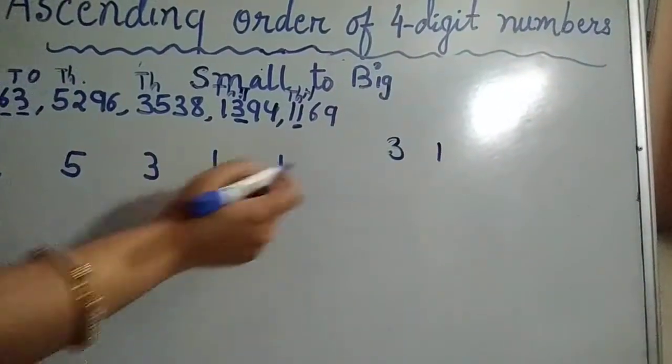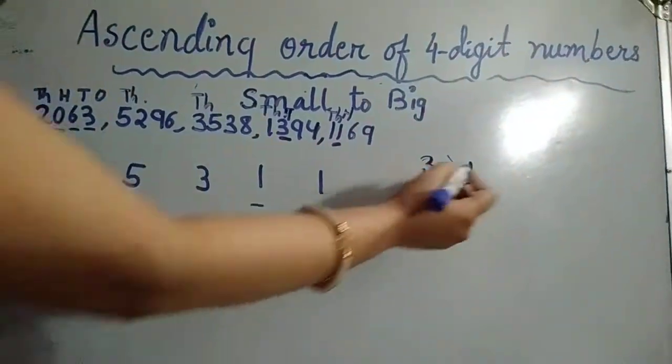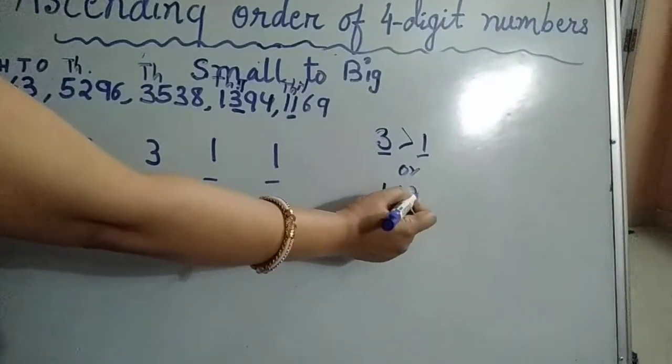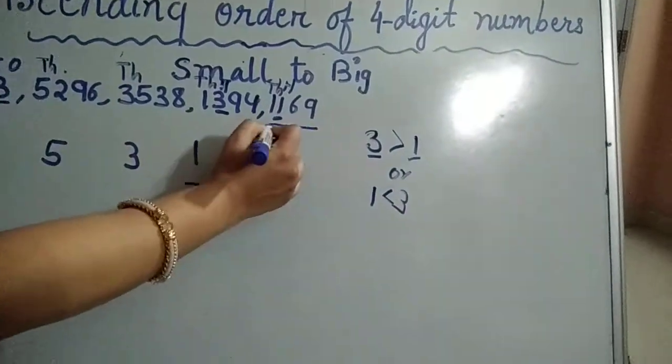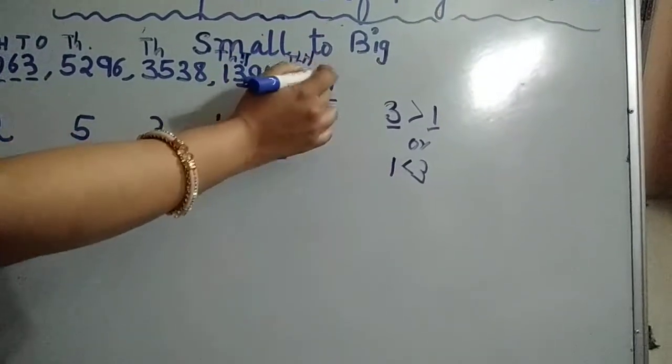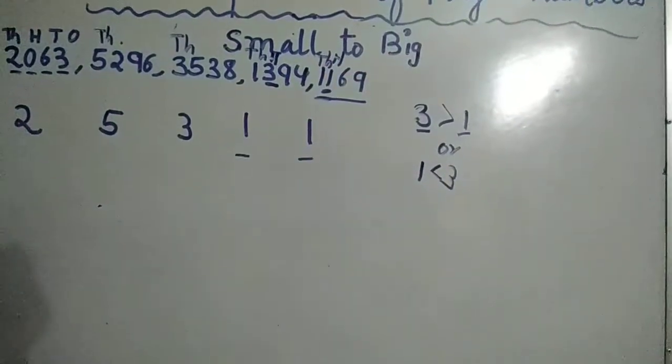So clearly we can see that three is greater than one, or we can say that one is less than three. This number has one in the hundreds place. That means this number, 1169, is the smallest number.